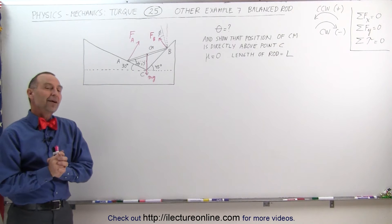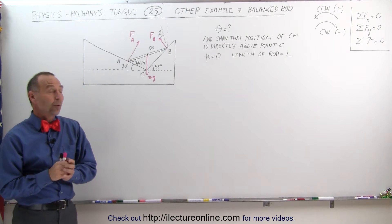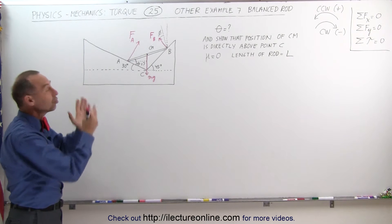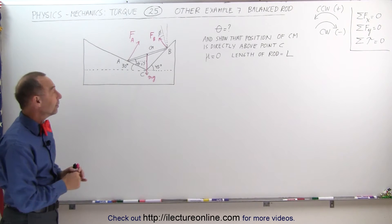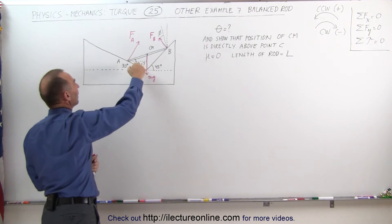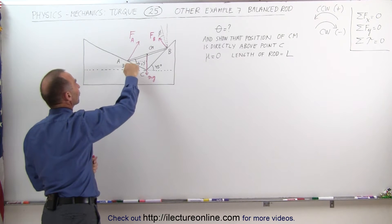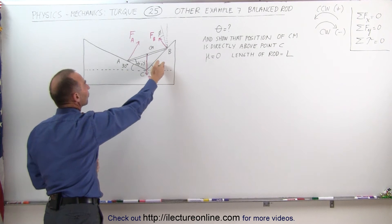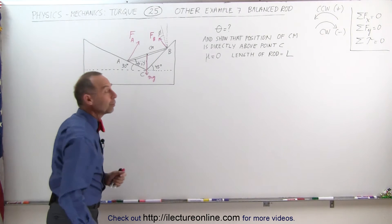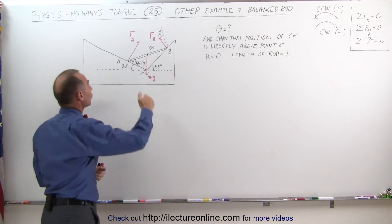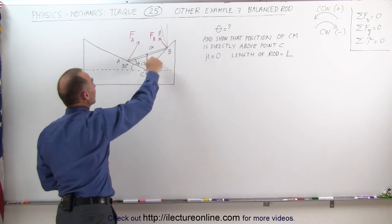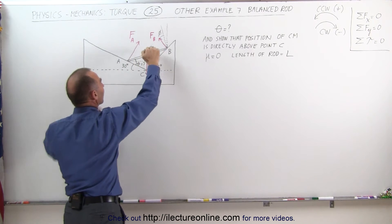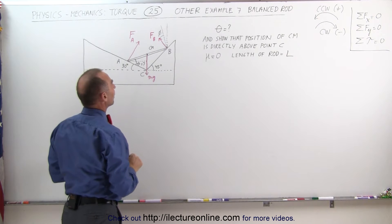Welcome to ElectronLine, and now for something quite challenging. Let's say we have a wedge shape right here, where the left side makes an angle of 30 degrees with the horizontal, and the right side makes 45 degrees with the horizontal. There's no friction on these two sides, and there's a rod that rests on the two sides.